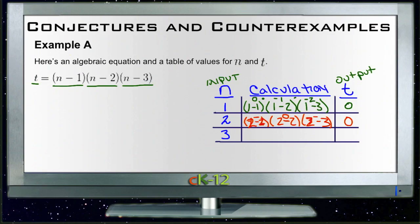And then finally, if we were to run 3 through, we'd get 3 minus 1 times 3 minus 2 times 3 minus 3. And again, these turn out to be something important, but this one here ends up being 0, so the output is 0. So based on this series of examples here, this series of trials, we might assume that it doesn't matter what number we put in for n, so we could say for all n, t is 0. So that could be our conjecture.